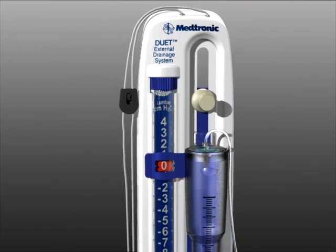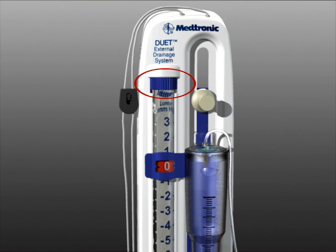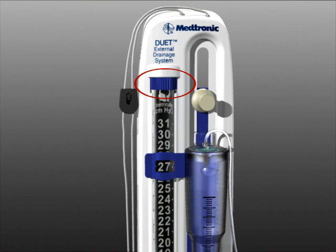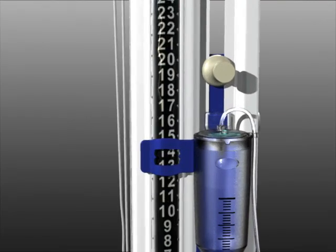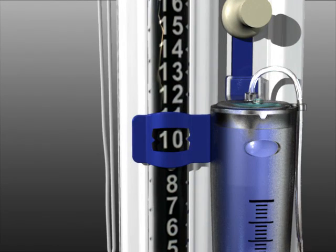Using the blue knob at the top of the pressure scale, rotate the scale to the desired position. Raise or lower the drip chamber to the desired pressure level as indicated by the physician.